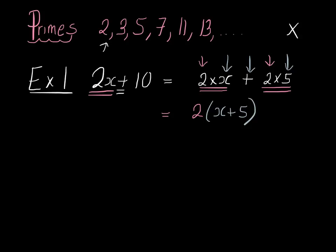At the end, just double check it actually works. If you were to expand this thing out, 2 times x would be 2x, 2 times 5 would be 10, and we would have done it correctly.